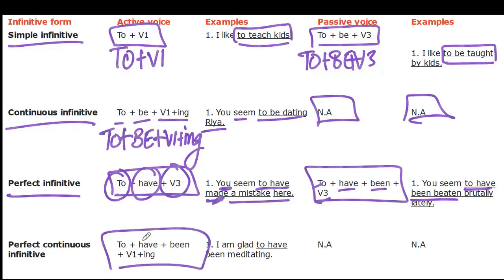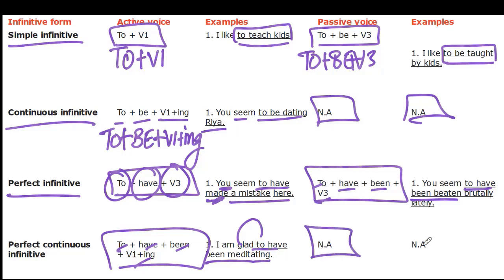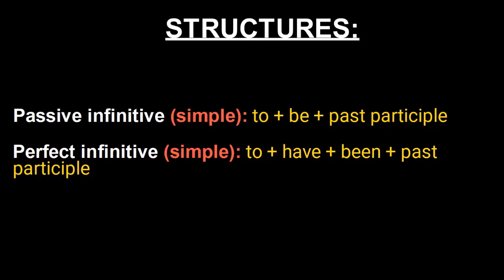The perfect continuous infinitive in the active voice is formed with 'to + have + been + present participle.' For example: 'I am glad to have been meditating.' This form does not have a passive structure. So those are all four forms of infinitives and their structures in both active and passive voice.